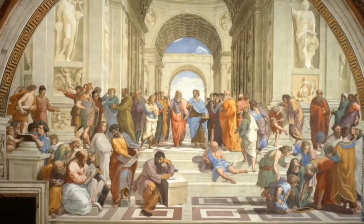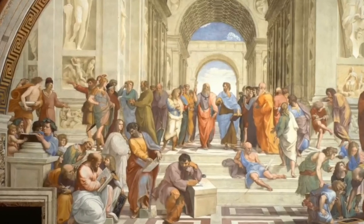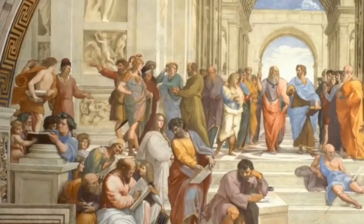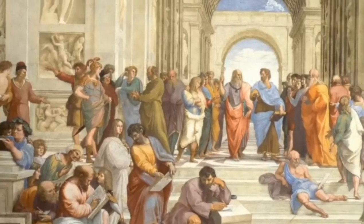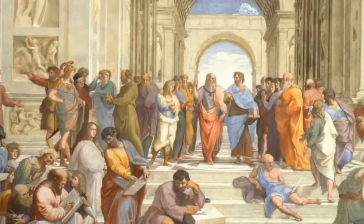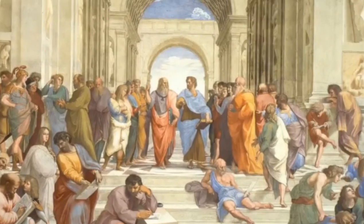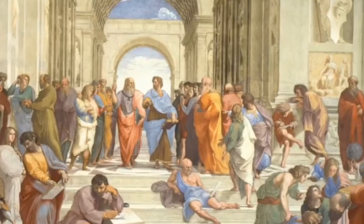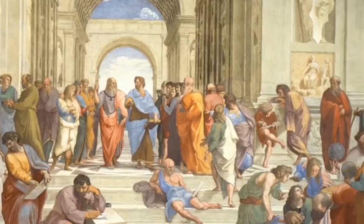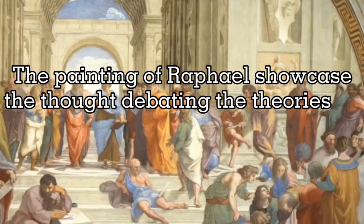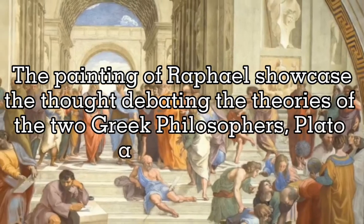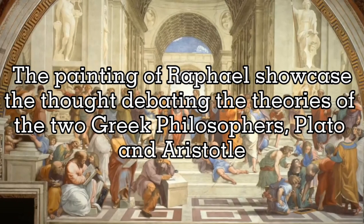Analyzing the painting, I noticed that its color blends with the ancient style of painting by using very light colors, probably based on Greek architectural design. The painting by Raphael showcases the thought of debating the theories of the two Greek philosophers, Plato and Aristotle.